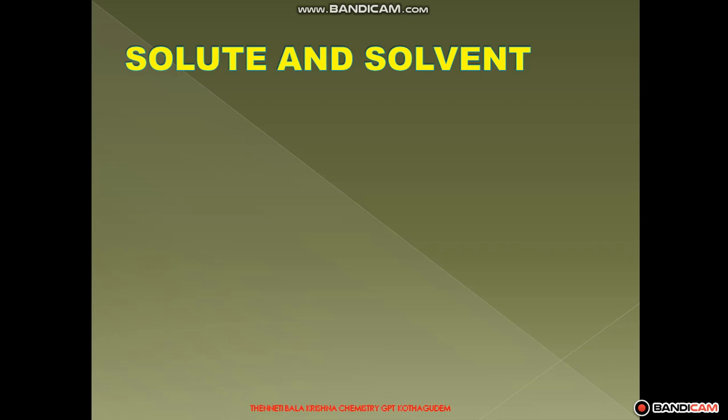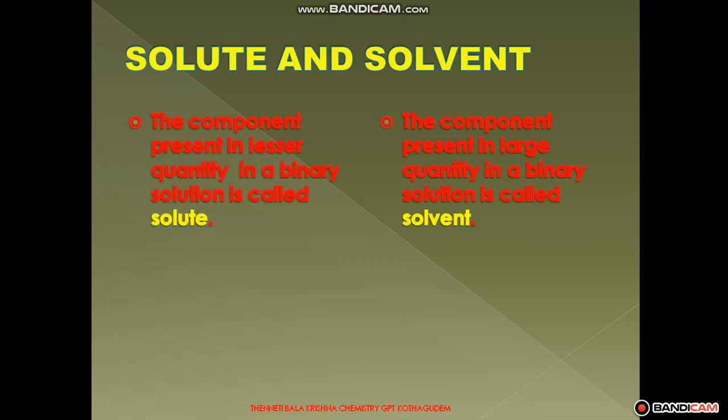In a binary solution, the solution is prepared using two components. One component is called the solute and another component is called the solvent. Which substance is called solute and which is called solvent depends upon the quantity ratio of the compounds. The component present in lesser quantity in a binary solution is called the solute, and the component present in larger quantity is called the solvent.